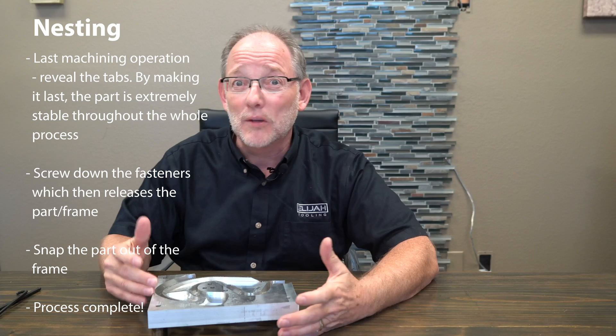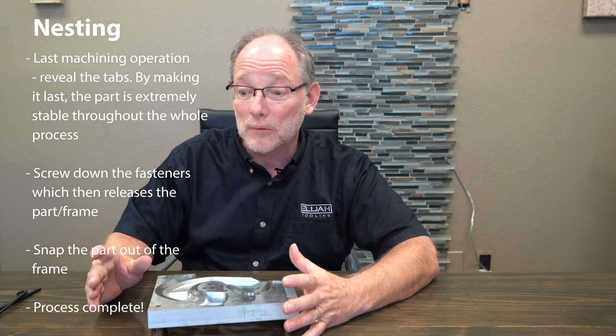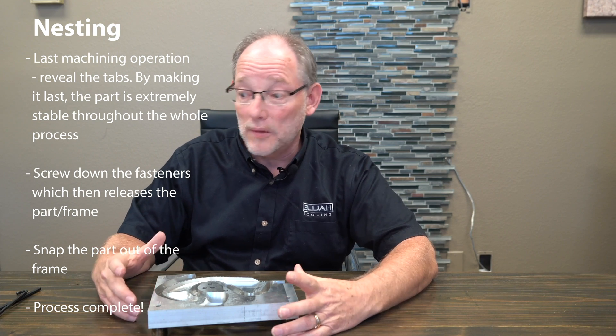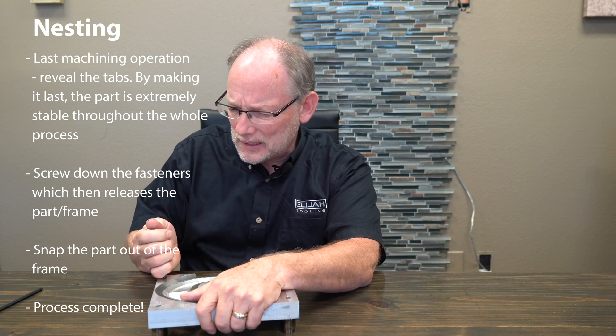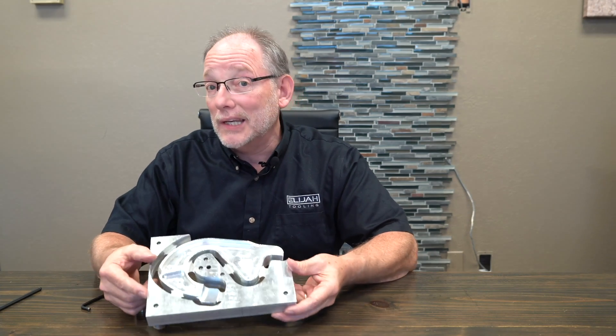At the end of the process, we reveal the tabs in the very last operation. Then we remove the part and remove the fasteners from it. I'm going to do that now — just with one of them though. We remove the fastener from the process. Remember, this is in your modular fixture plate. You take it off and then you snap the part out of the frame. That's the idea. I hope it's been helpful. See you next time.